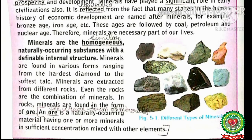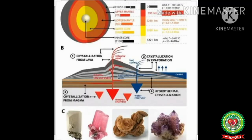Minerals are homogeneous — meaning similar — naturally occurring substances with a definable internal structure. Minerals are found in various forms, ranging from the hardest diamond to the softest talc. This is because minerals are formed in the earth's crust after millions of years; hence the duration of formation of minerals also leads to different forms.